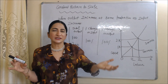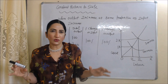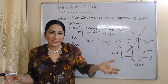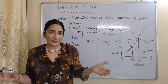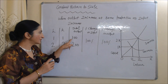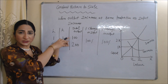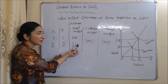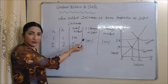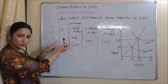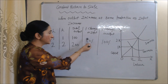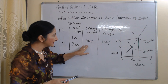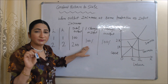Now we will see constant returns to scale. When output increases at the same proportion as input increases, it is called constant returns to scale. Here you can see one labor and one capital giving 100 units of production. When we change both inputs — labor and capital — from one to two, output increases from 100 to 200 units. Percentage change in input is 100%, and percentage change in output is also 100%. Since the percentage increase in output is exactly the same as the percentage change in input, this is called constant returns to scale.